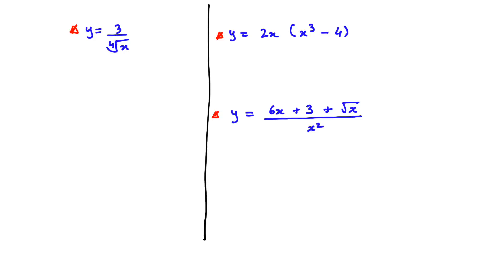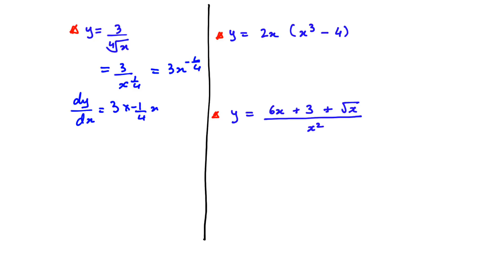In this question the x is in the denominator written as a radical, so first write it as a power. We get 3 over x to the power of 1/4, which we bring up to become 3x to the power of negative 1/4. Now differentiate: multiply 3 by −1/4, and subtract 1 from −1/4 to get −5/4. So dy/dx = −3/4 · x to the power of negative 5 over 4.